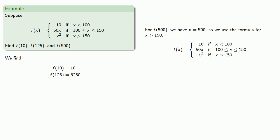For f(500), we have x equal to 500, so we use the formula for x greater than 150. And again, these first two lines aren't applicable because x is not less than 100 and x is not between 100 and 150. So we can ignore them. Our formula says to square 500, and so we get the result.